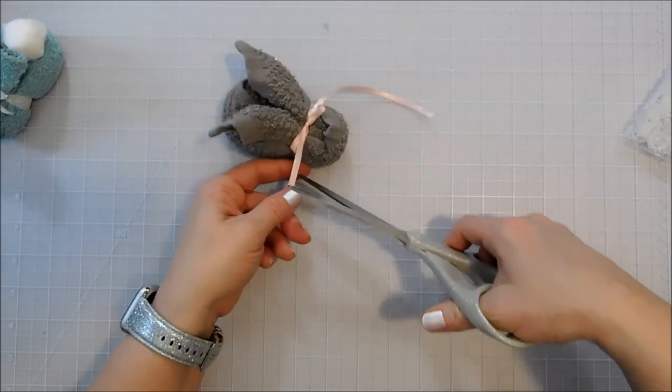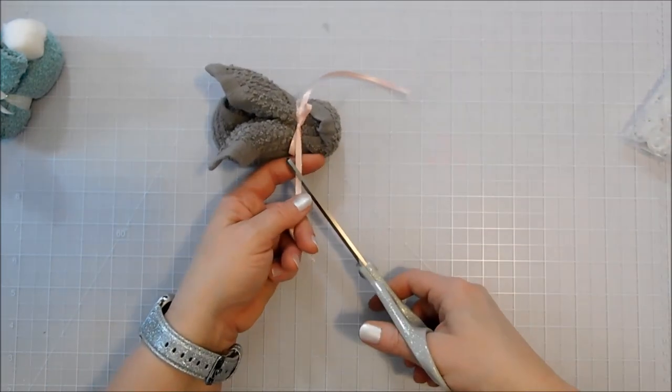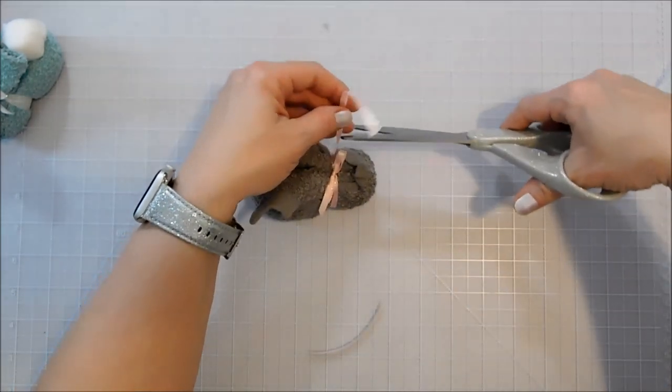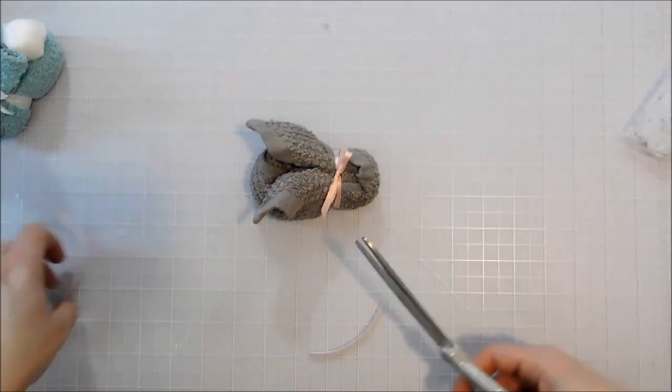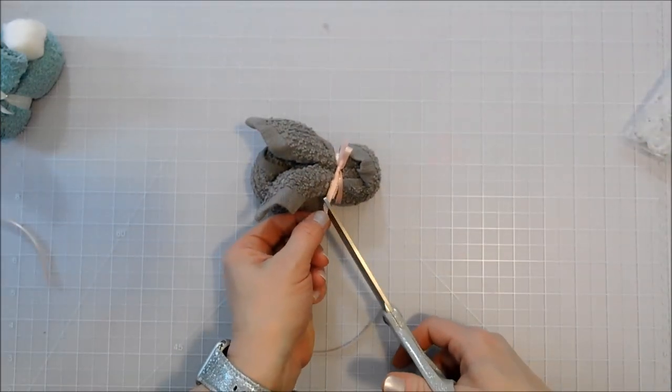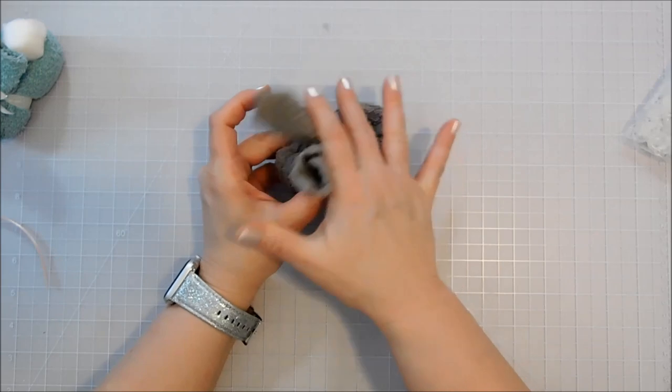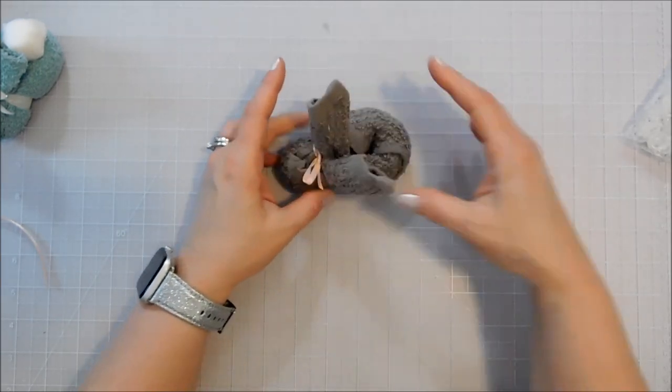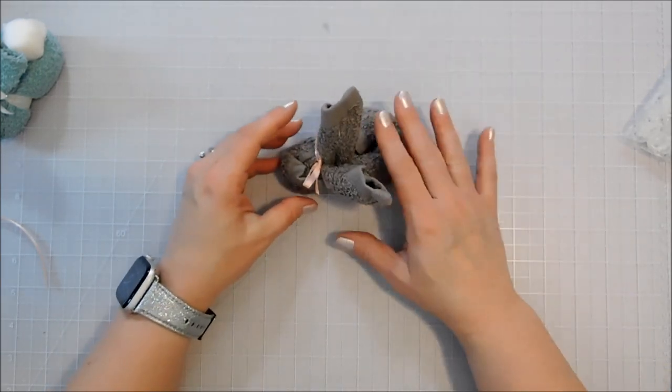So then when you get the bow adjusted the way you want it, just trim those ends. Okay, we're going to fluff his ears up a little bit, make sure that he's sitting even.